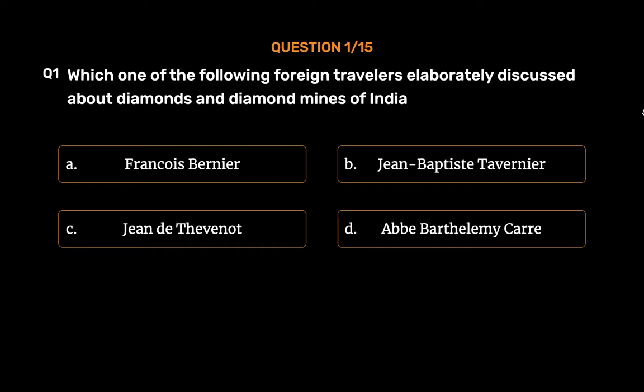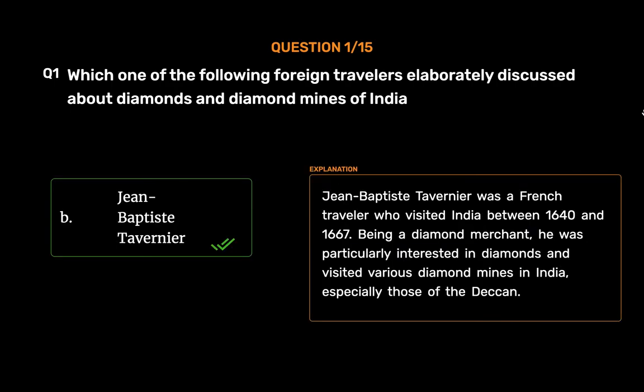The correct answer is Option B: Jean-Baptiste Tavernier. Jean-Baptiste Tavernier was a French traveler who visited India between 1640 and 1667. Being a diamond merchant, he was particularly interested in diamonds and visited various diamond mines in India, especially those of the Deccan.